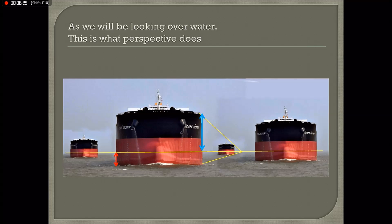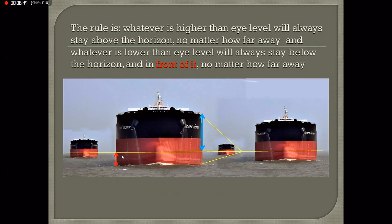If we assume the horizon is always at eye level — as all flat earthers take as a golden definition — then everything above eye level will always stay above eye level no matter how far away it is. Everything below our eye level will always stay below the horizon. So no matter how far a ship is away, if we zoom in with a telescope we will always see that part above the horizon and that part below the horizon, with the horizon behind it. On a flat earth this would continue forever — you could magnify and magnify and that rule would always hold.